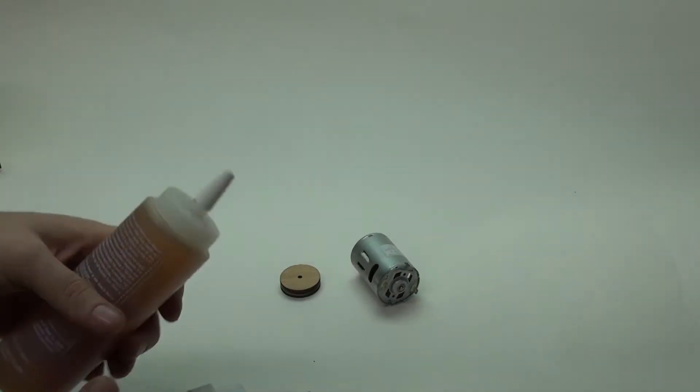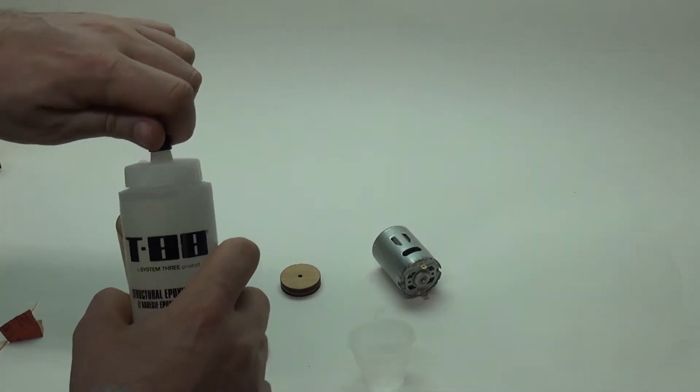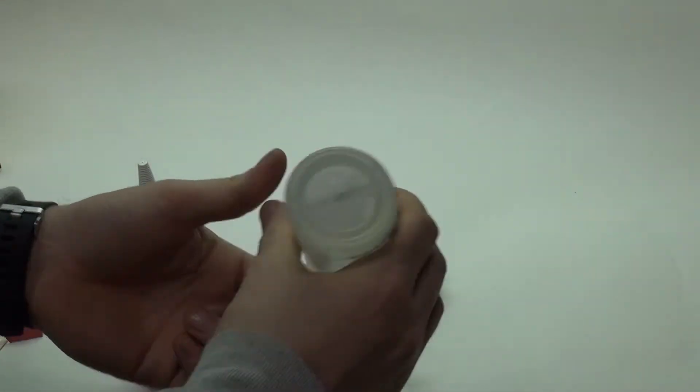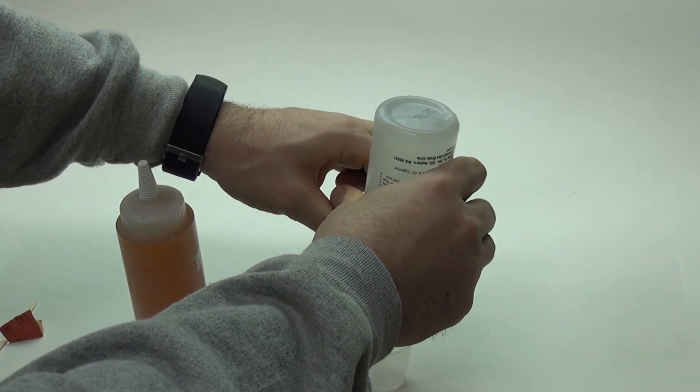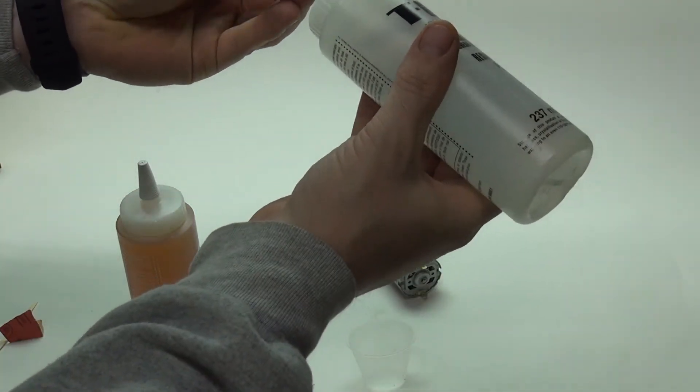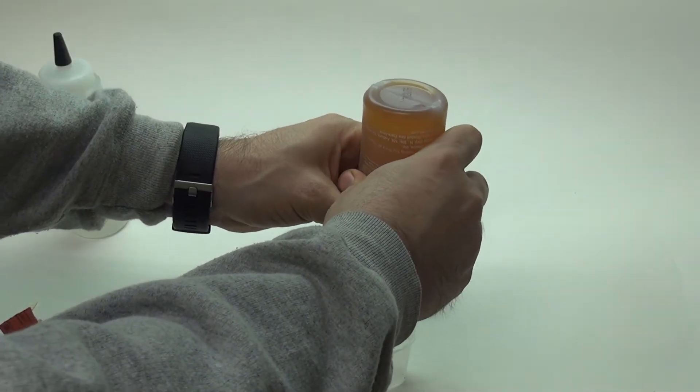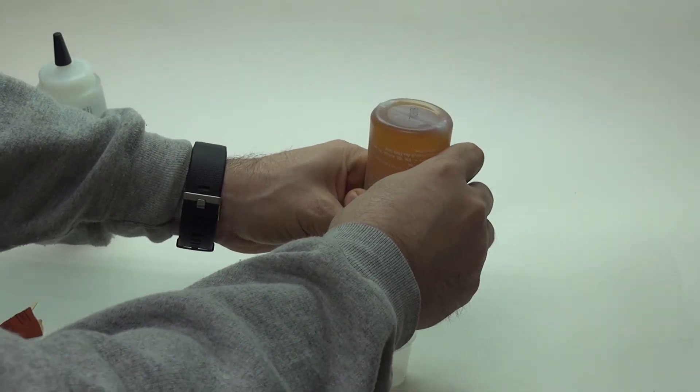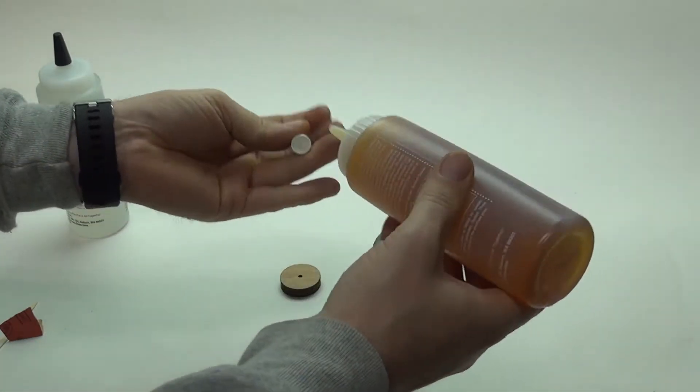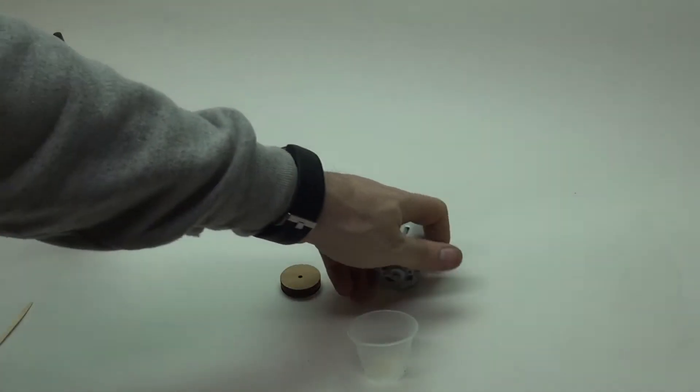At your local hardware store there are lots of different types of two-part epoxy. I'm just using one I've got here, but you don't need much—just a tiny amount is all you need. I found epoxy holds the wood to the metal shaft a lot better than other substances.